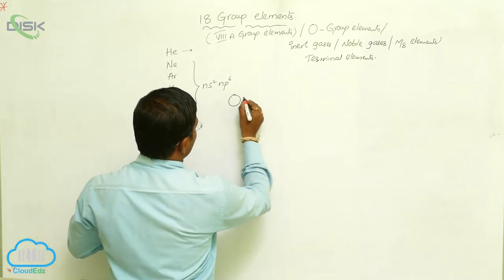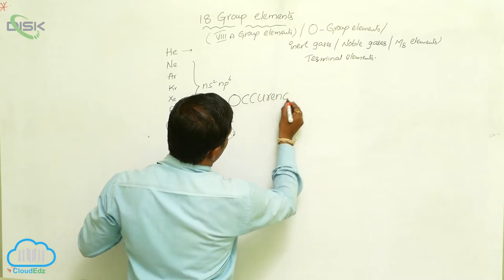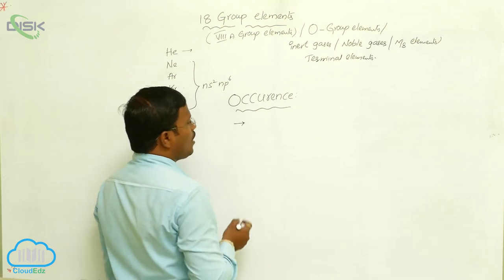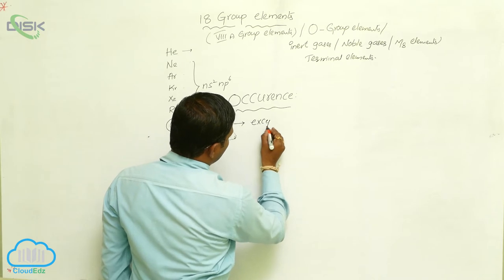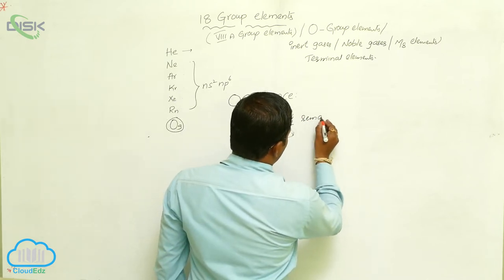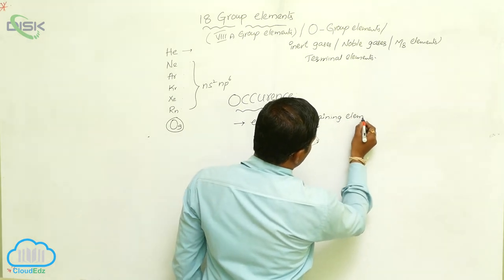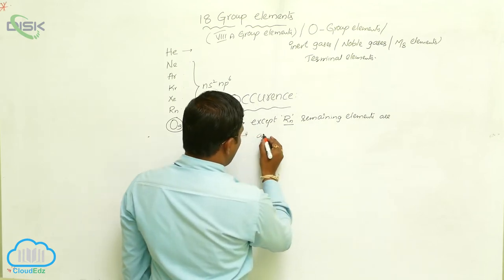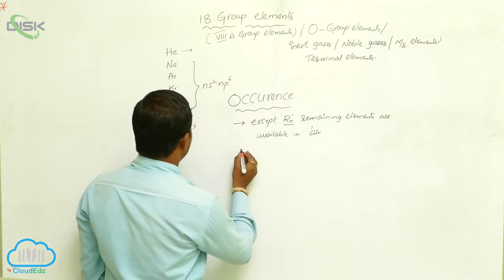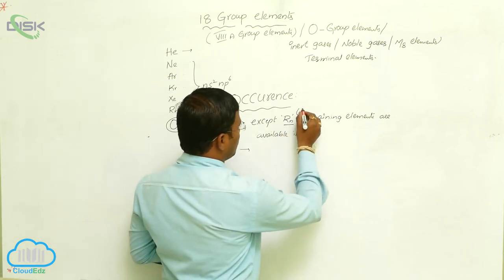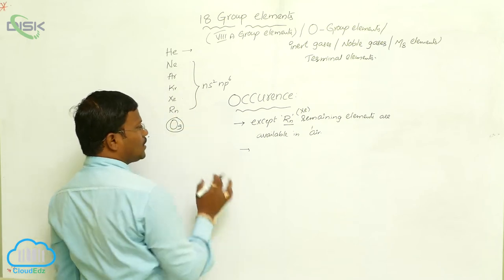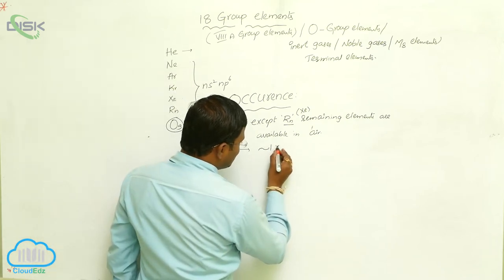Let us have occurrence. Occurrence of 18th group elements or group 18 elements or 8th A group elements. All the 18th group elements except Radon. Except Radon, remaining elements are available in air. Radon and some amount of xenon also not available in air. So except Radon and xenon, Helium, Neon, Argon, Krypton are available in air.